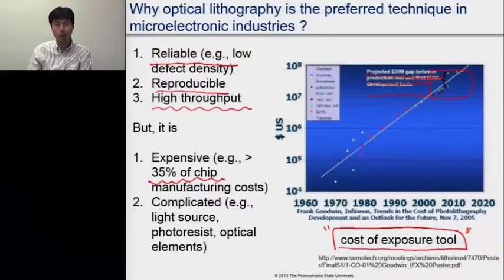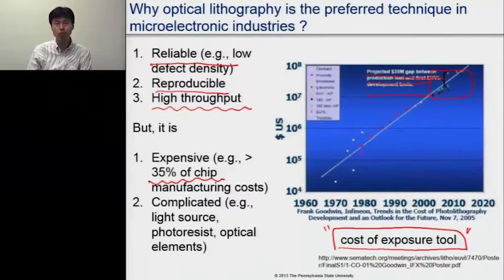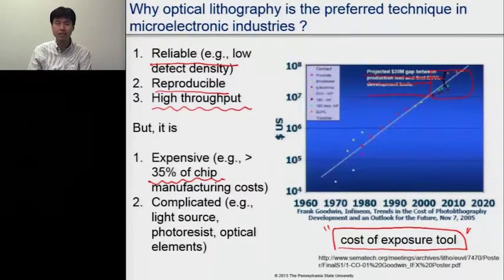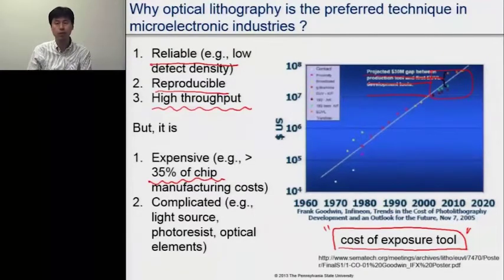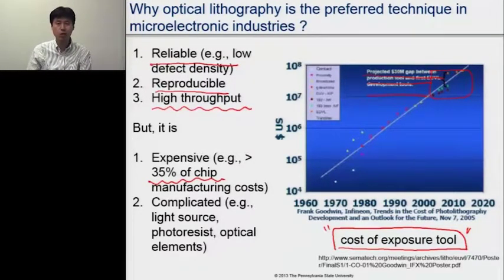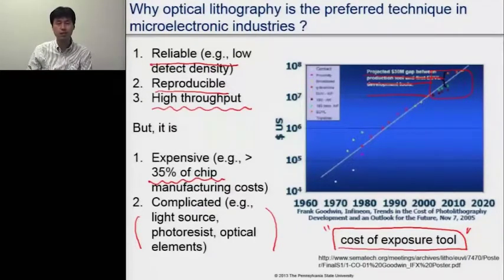As we pursue much smaller feature sizes, the process is getting more complicated. For developing lithography technologies, people need to develop new tools and new photosensitive materials — in other words, photo resist. For tool development, people develop new light sources and new optics for lenses and mirrors. All of these developments must go together to achieve the final technology, so it is not simple — it's a very complicated process.